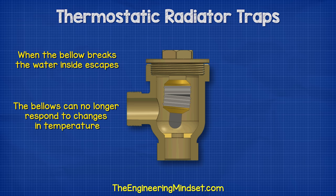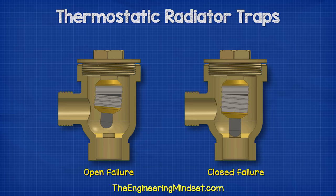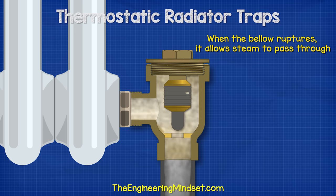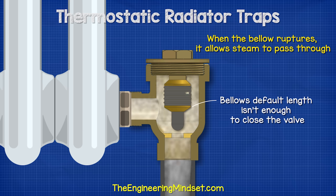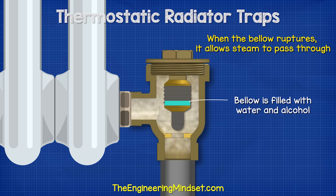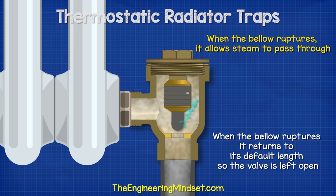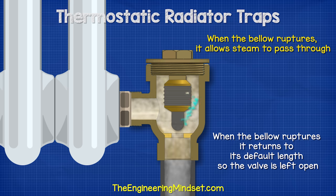When bellows fail, the trap can either fail open or closed depending on the type of construction. With an open failure, when the bellow ruptures it allows steam to pass through. This occurs because the bellow's default length isn't enough to close the valve — the bellow is filled with water and alcohol which expands and forces it past its default position. When the bellow ruptures it returns to its default length, leaving the valve open. This allows steam to flow through, wasting energy and causing problems in the system.